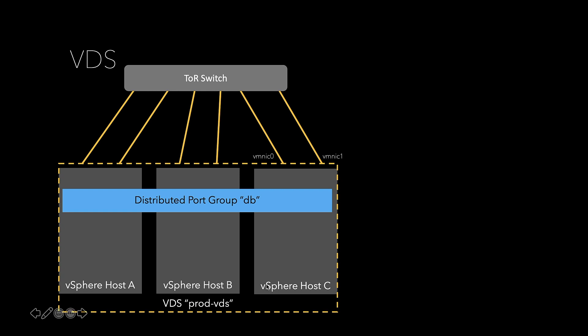What I want you to focus on is below that we have a VDS, or distributed switch, and in this case the name of it is called prod-vds. We've gone inside of that VDS, configured it in vCenter, and we've told it that we want to create a distributed port group called "db" — so we'd use that for database VMs. As part of that configuration, we've said the distributed switch should own vmnic0 and vmnic1 on host C, vmnic0 and 1 on host B, and the same on host A. Those uplinks are directly owned by that VDS and are not available to another VDS, a standard switch, or an NVDS — those uplinks are spoken for.